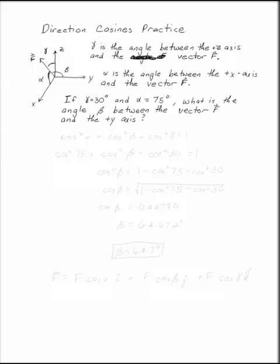If gamma is given as 30 degrees and alpha is 75, what is beta between the vector f and the positive y-axis? Remember that any time you're using these direction cosines, you have this wonderful identity.